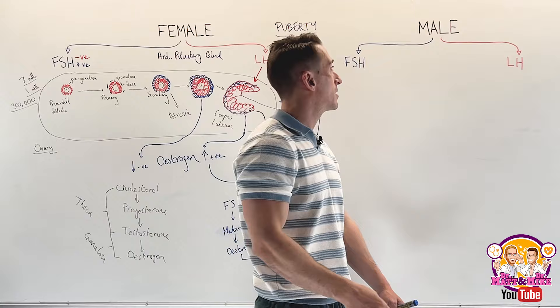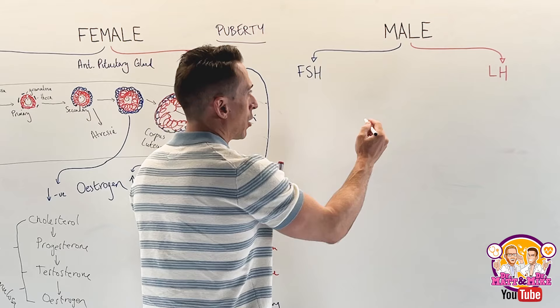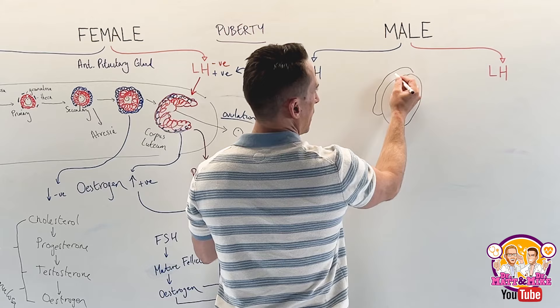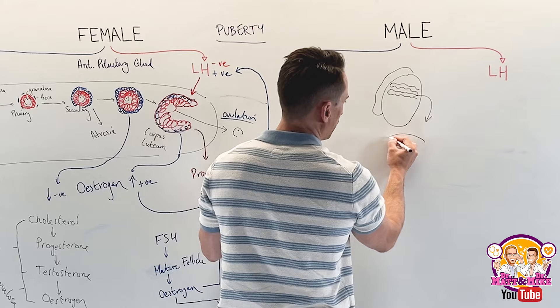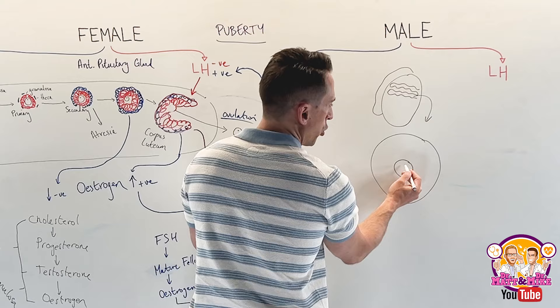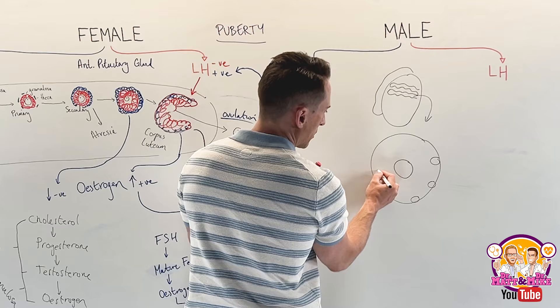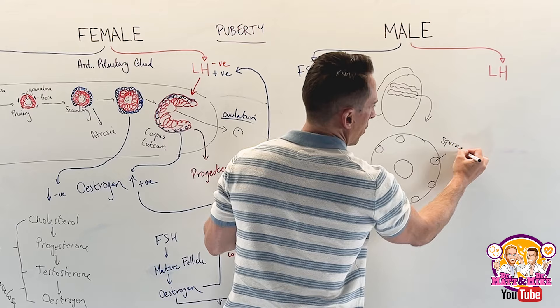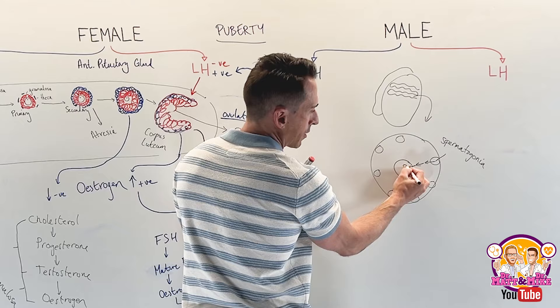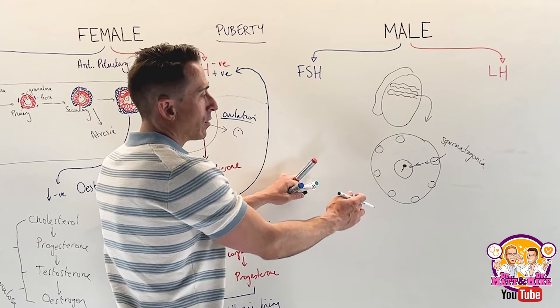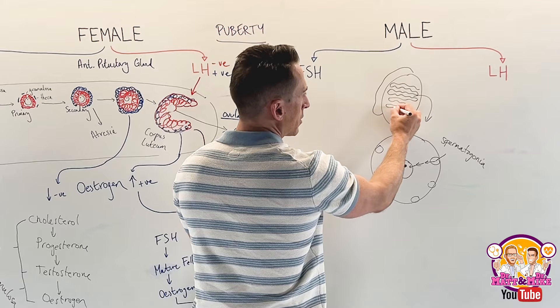Inside a testicle, you've got the epididymis and the testes itself. Inside the testes are metres of tubules called seminiferous tubules. Inside one of these seminiferous tubules — hollow in the middle — you have sperm stem cells called spermatogonia around the outside. These slowly mature and become spermatids, which are immature sperm. They then swim through the seminiferous tubule to the epididymis, where they stay and mature until ejaculation.